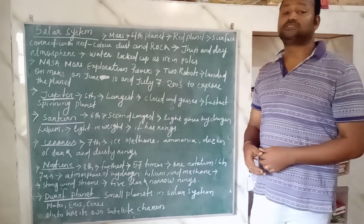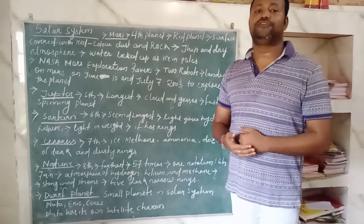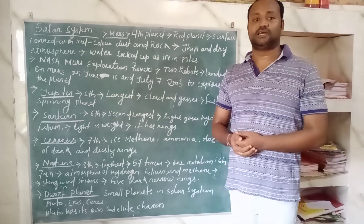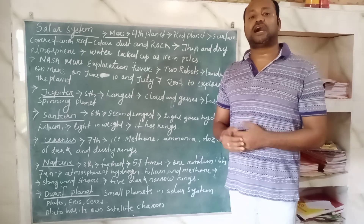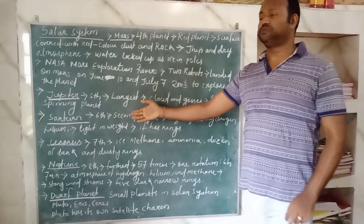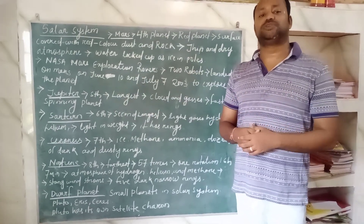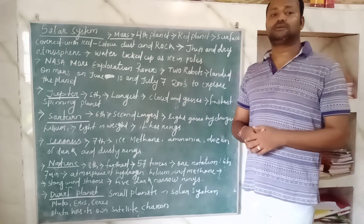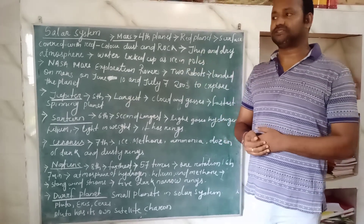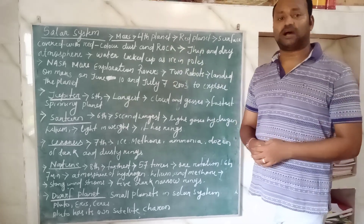Mars is an inner planet which lies just before the asteroid belt in the solar system. The asteroid belt lies between Mars and Jupiter, and this asteroid belt separates the inner planets and outer planets. So let's discuss about Mars.